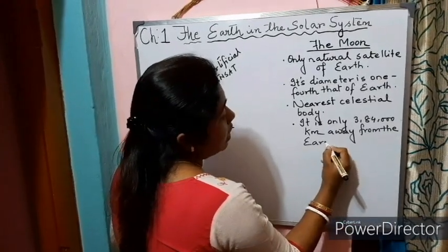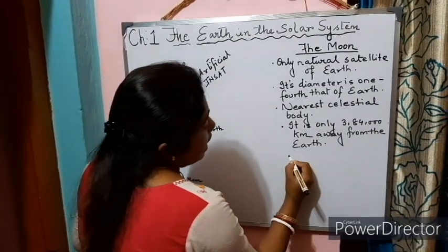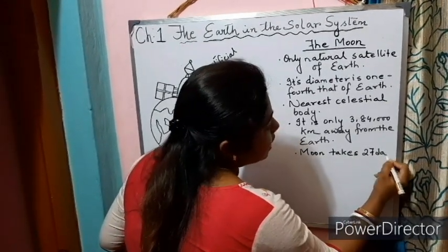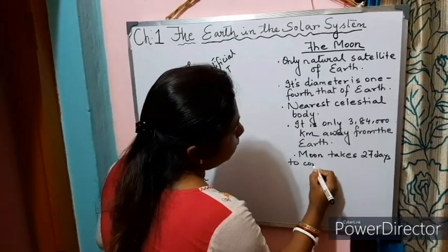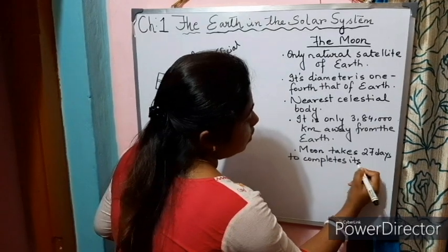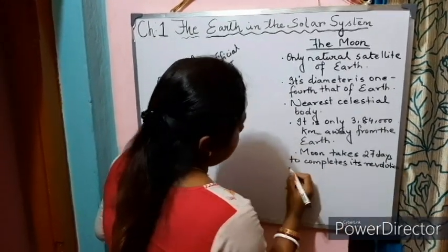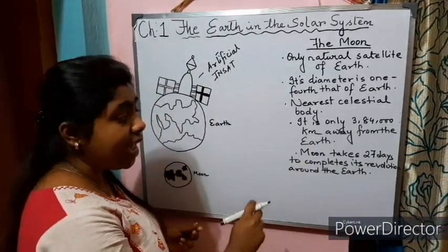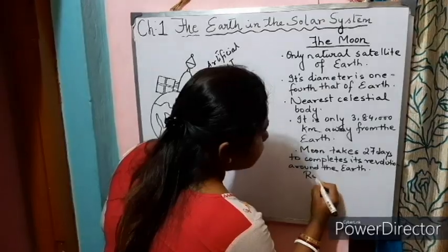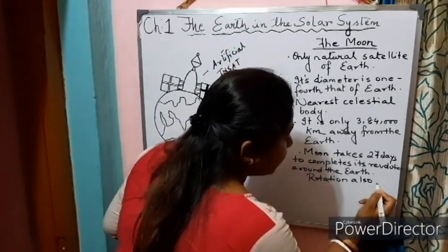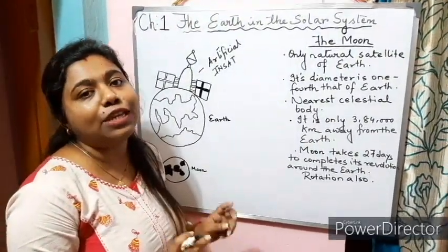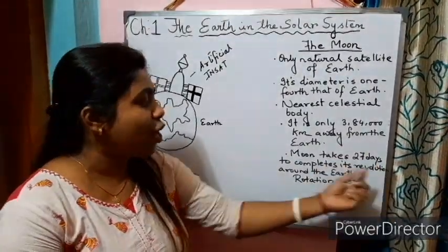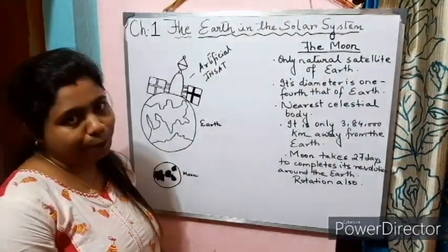The Moon takes 27 days to complete its revolution around the Earth. Interestingly, it takes the same time to complete its rotation as well - that is 27 days. That is why we can only see one side of the Moon.